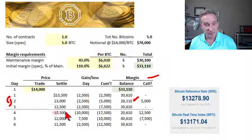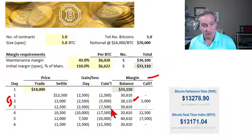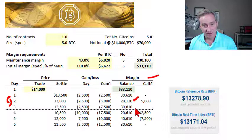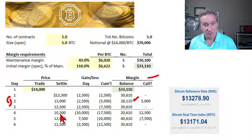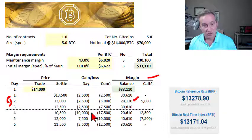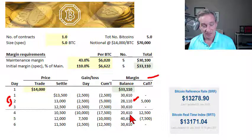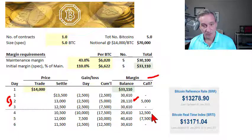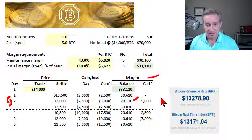On day three, I simulated another loss of $500, giving a cumulative loss of $7,500. Our margin balance is now $30,610 — still above the maintenance margin, so no margin call. Then for day four, I simulated a dramatic drop of $2,000 per Bitcoin, giving a cumulative contract loss of $17,500, bringing the balance down to $20,610, which triggers another margin call — this time for $12,500 to top us up again to the initial margin.